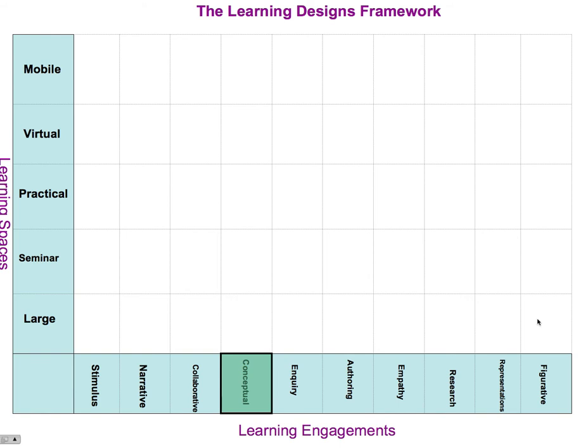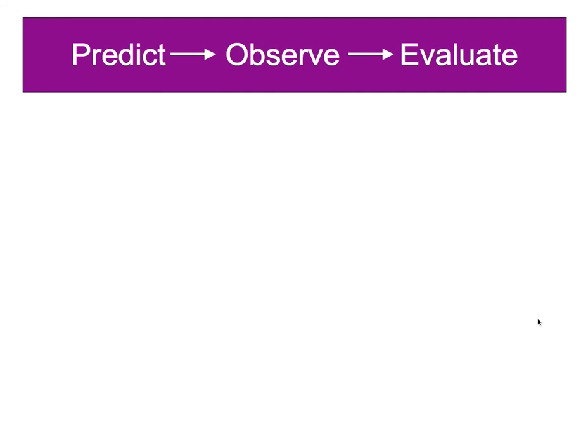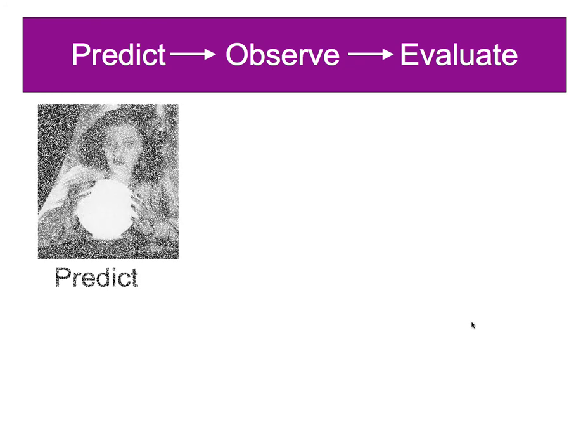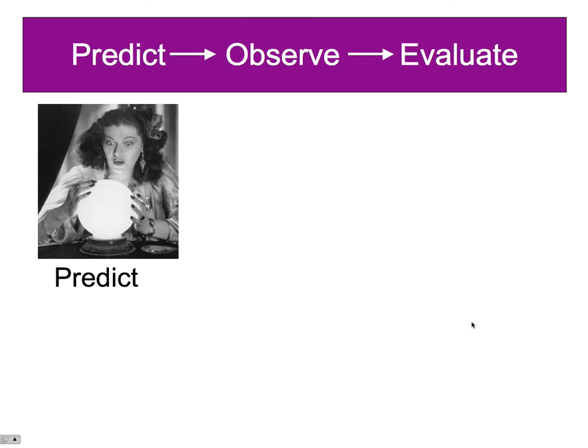This can be used in a wide variety of different contexts. Typically the model has been appropriated from good science teaching, whereby students are encouraged to try to predict what might happen in a particular instance — for example an experiment — rather than being shown. So typically the process is to encourage students to actually make a prediction or hypothesis about what they think might happen.